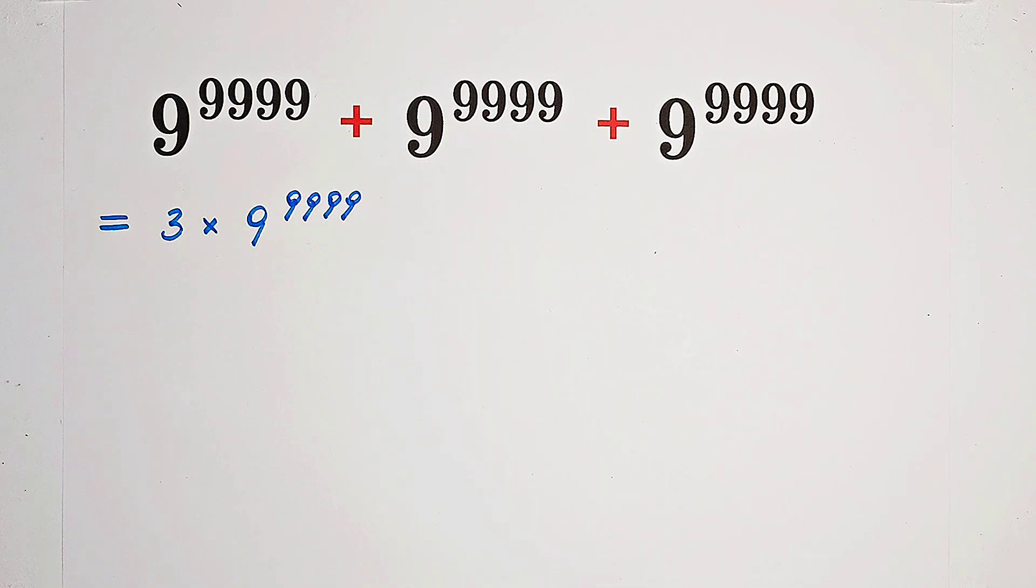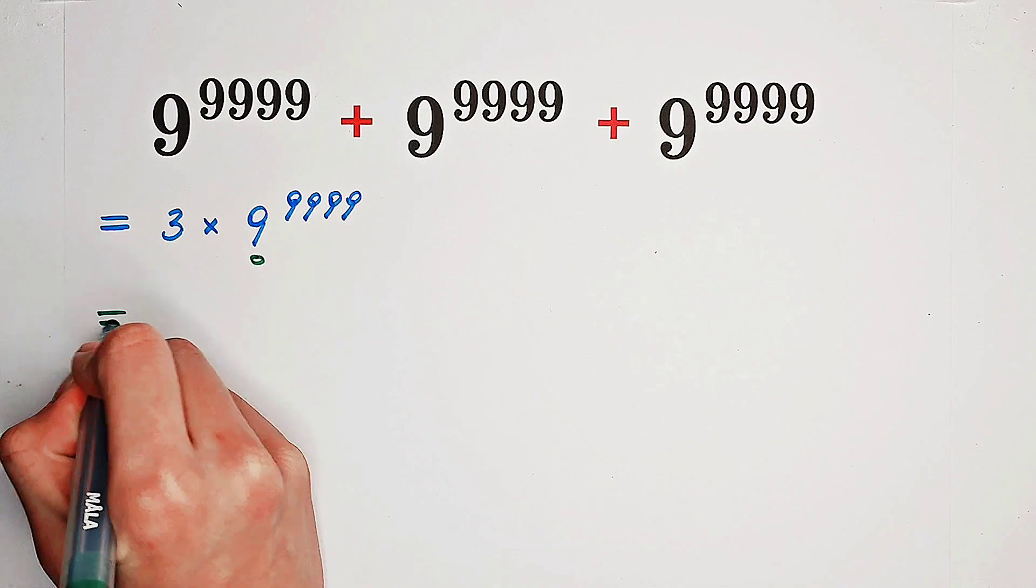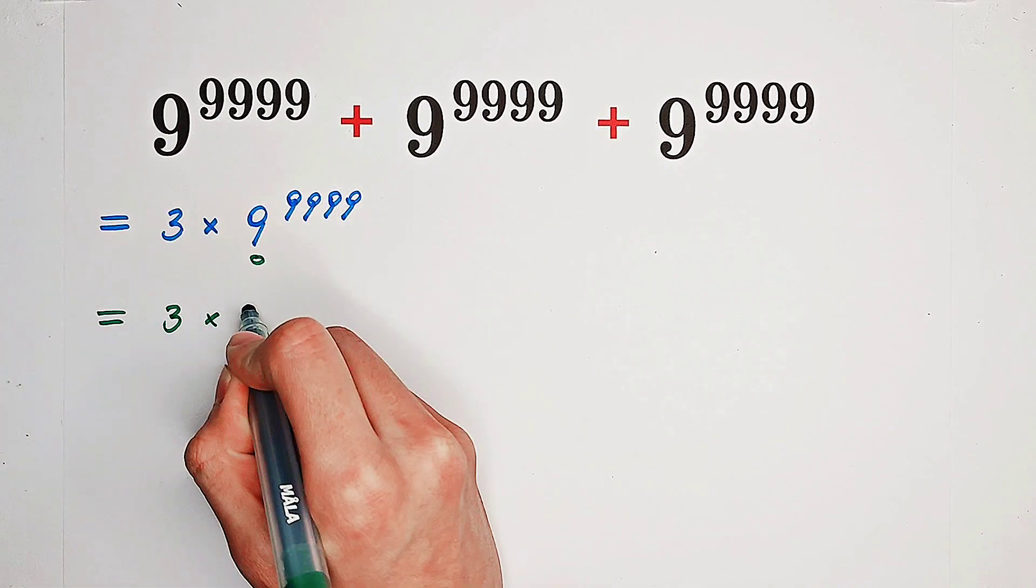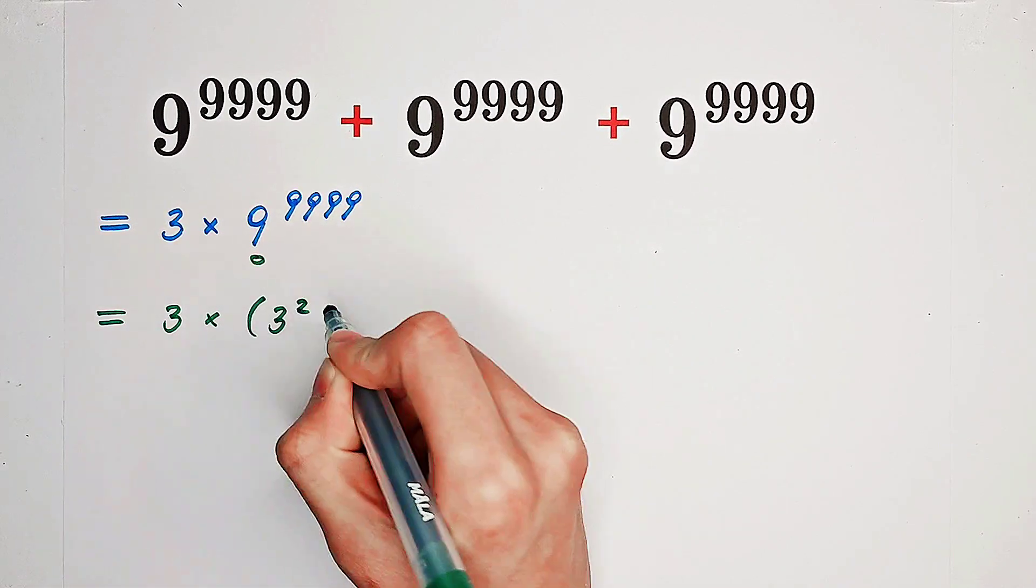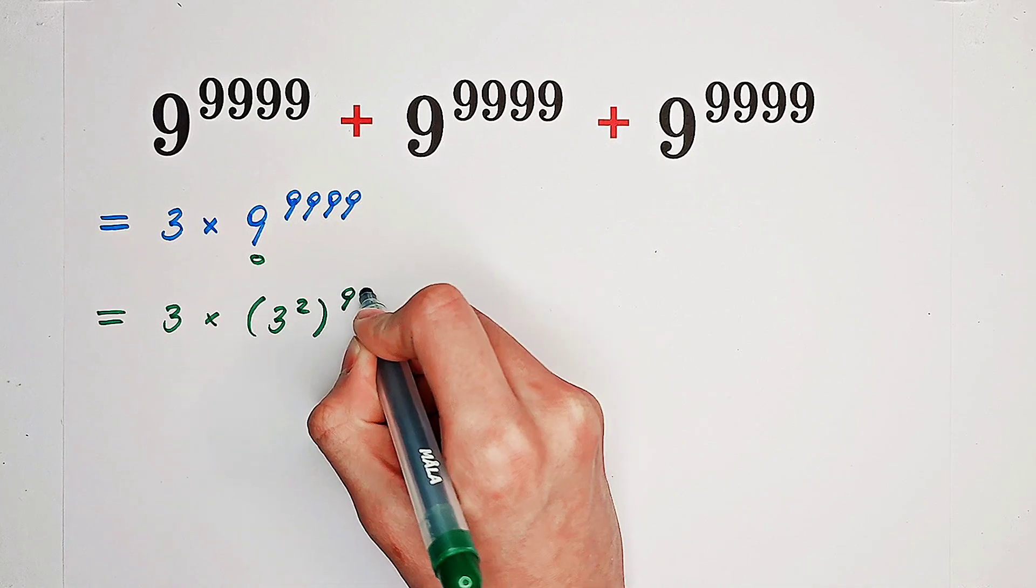And now, what shall we do? Notice that 9 is a perfect square. It is 3 squared. So it is 3 times 3 squared and then to the power of 9,999.